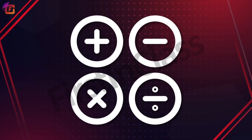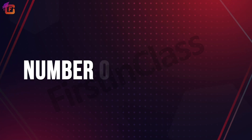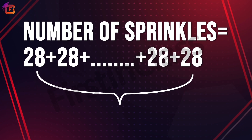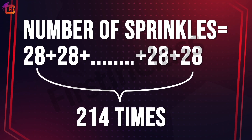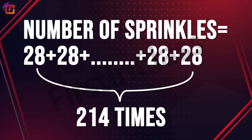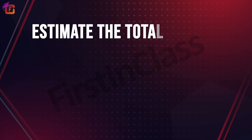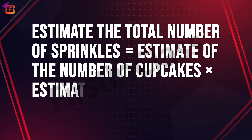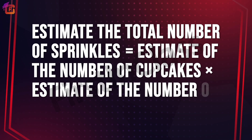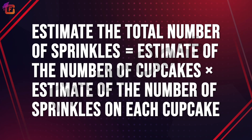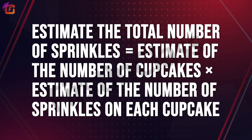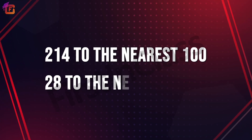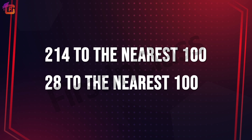We estimate the total number of sprinkles by multiplying the estimate of the number of cupcakes by the estimate of the number of sprinkles on each cupcake. So, can we estimate the total number of sprinkles by estimating 214 and 28 to the nearest hundred? Think about it.